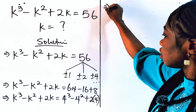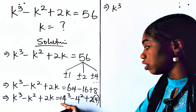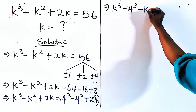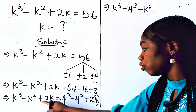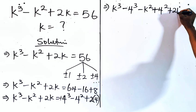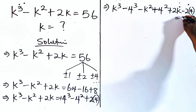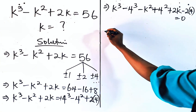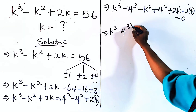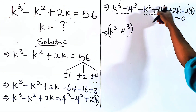This gives us k cubed. We are going to take this to the left side, so we subtract. So we are going to subtract 4 cubed, then we have minus k squared — this one is negative, you add — so we add 4 squared to both sides. Then we have plus 2k, and this will now become minus 2 multiplied by 4. Everything is equal to 0. So we have k cubed minus 4 cubed together, and we are going to factor because the powers are the same.